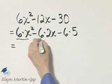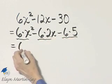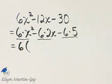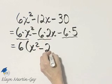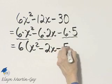It's just that now we're able to see that common factor of 6 that we will factor out. I'll have left x squared minus 2x minus 5.